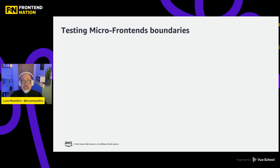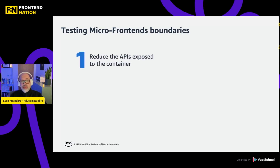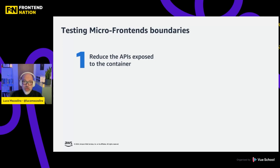When you want to test whether the boundaries of your micro frontends are correct, think about four key things. First, you usually reduce the API exposed to the container — the container should just load the micro frontend and not know anything about it. It should maybe expose some generic configuration, like allowing the micro frontend to retrieve the JWT token. The moment the container knows about the domain, you are creating coupling and external dependencies you don't want in a distributed system.